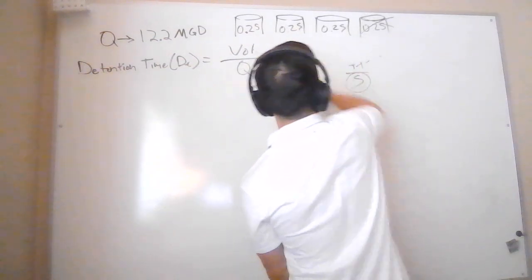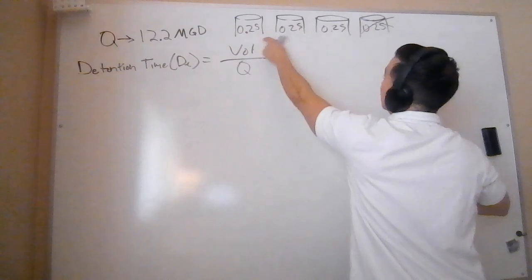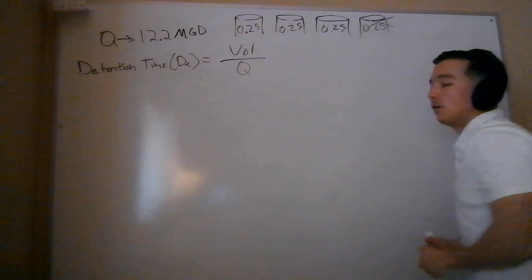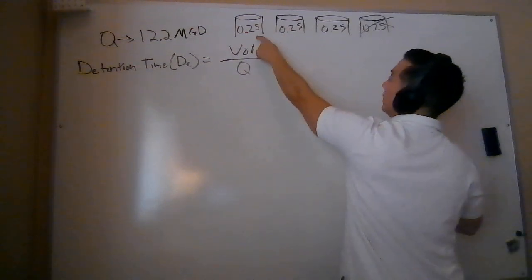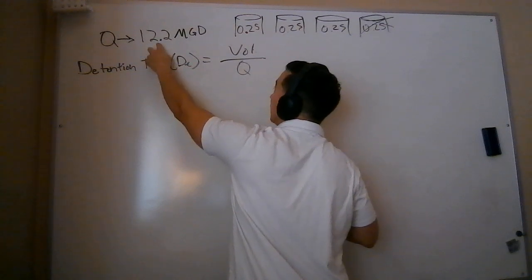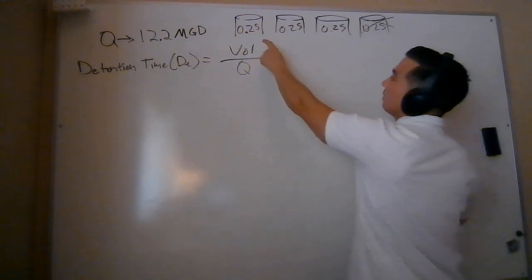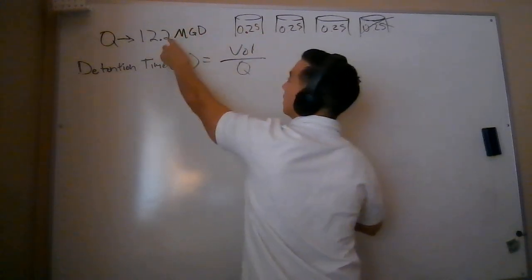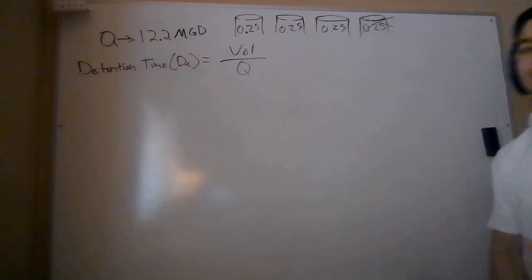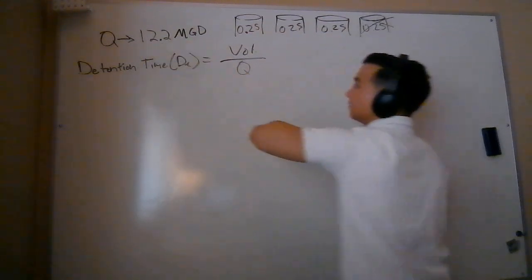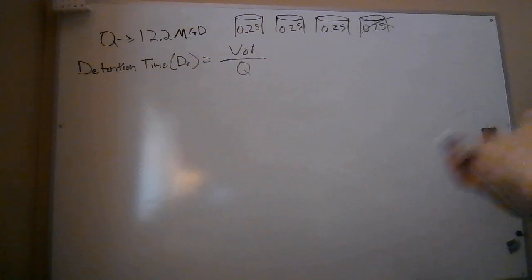Okay, so let's see what we got. We need volume. We're not directly given it, but we can figure it out pretty easily and we've got our flow. Now we need to consider the fact that there are three clarifiers treating a total flow of 12.2 million gallons per day. So a couple different ways to do this problem. Whichever way your brain thinks about it best, it makes the most sense to you is what you should go with. In this example, I'm going to say that one clarifier is treating a third of that total flow. The other way to do it would be to think about three clarifiers are treating that total flow. So either way, you're going to have to take into account a factor of three at some point.